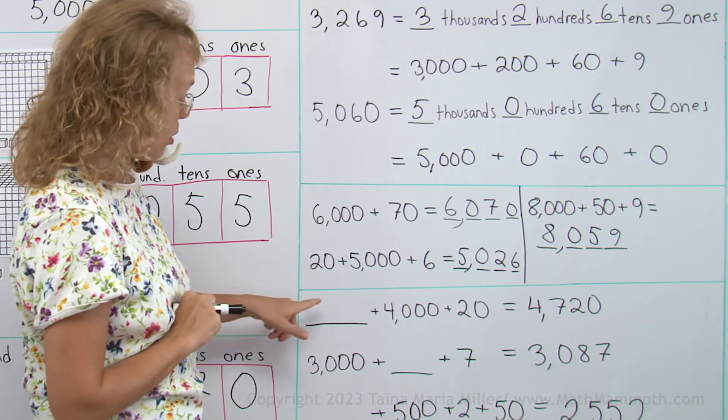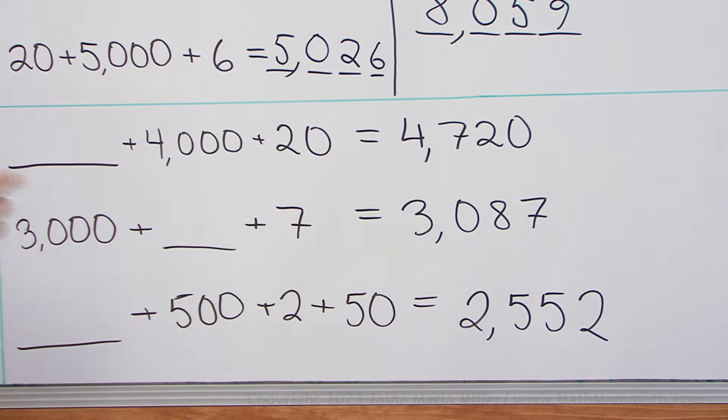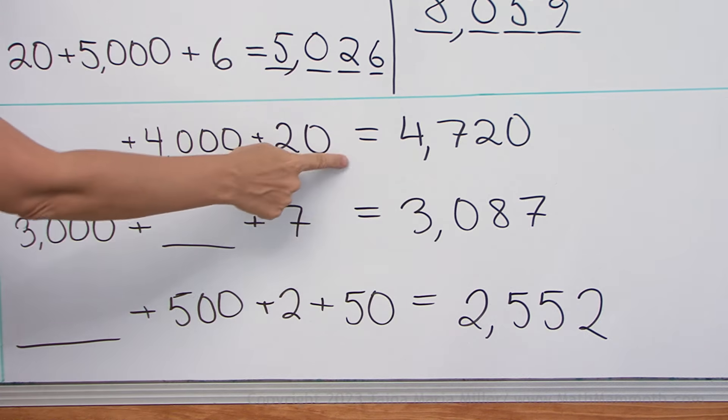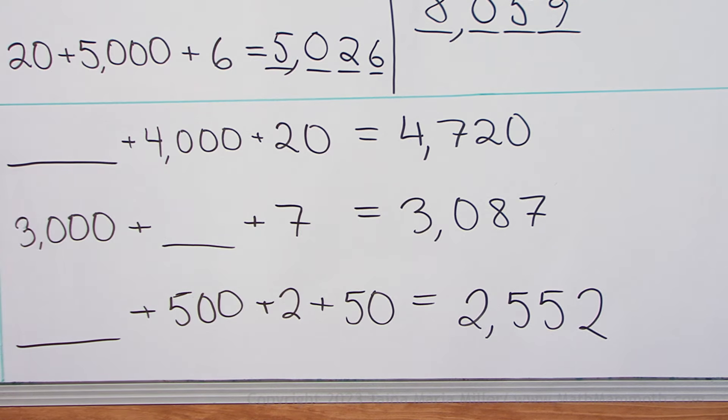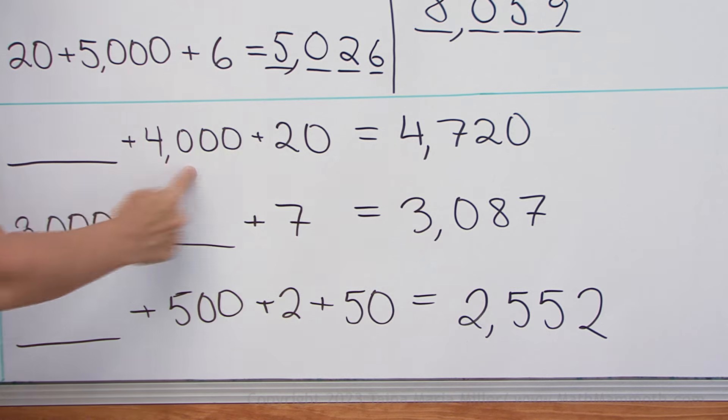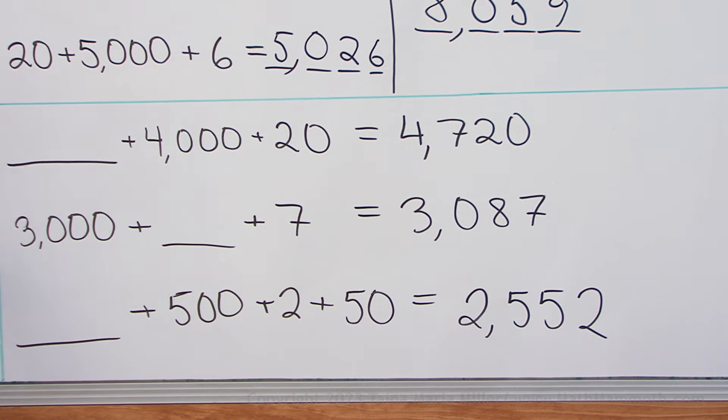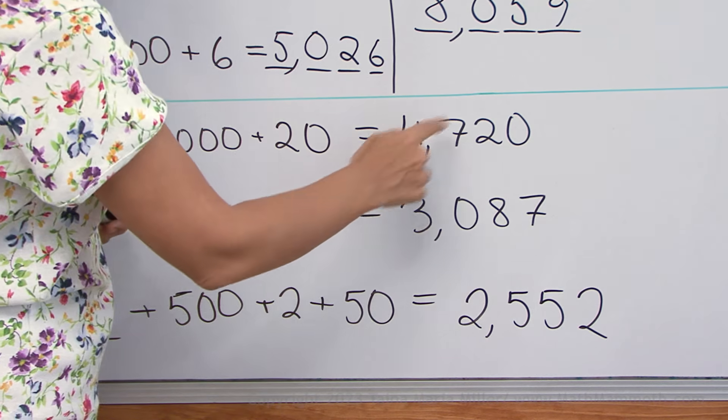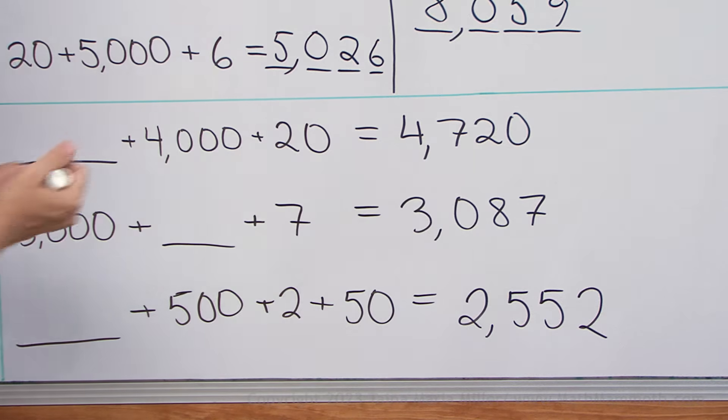Lastly, we do something similar. My number is already written here. And here it is written as a sum, but one of the parts is missing. Four thousand and twenty and something makes four thousand seven hundred twenty. Can you see what's missing? Seven hundred is missing.